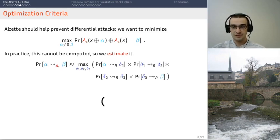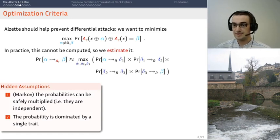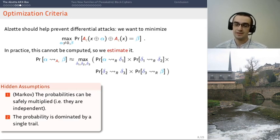The first assumption is the assumption that we can just multiply these probabilities, meaning that they are independent. A priori, it's not the case, but it's a standard assumption to make in symmetric crypto. Usually, it's the Markov assumption. We rely on the addition of subkeys to have more confidence in the fact that it holds.